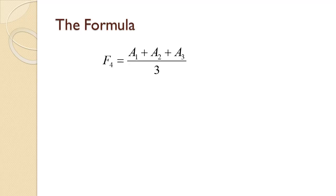First, let's review the notation. The formula on the slide says that the forecast in period four is equal to the actual in period one plus the actual in period two plus the actual in period three, all divided by three. That notation of the forecast and actuals in a given period will be used throughout this section. This is a three-period simple moving average since we add up three numbers and divide by three. Actuals one through three give us the forecast for period four. Actuals two through four give us the forecast for period five, and so on.